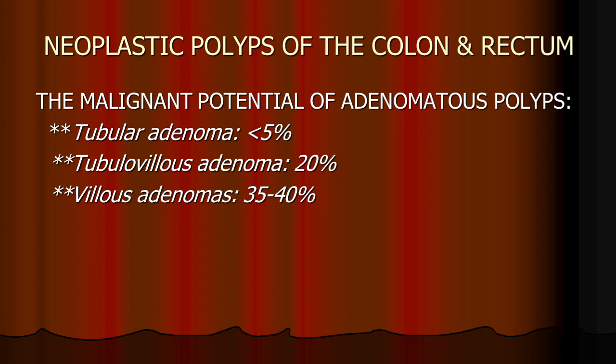The malignant potential of adenomas by type: tubular adenomas, usually smaller than one to one and a half centimeters, carry less than 5 percent risk. When the villous component enters, making it a tubular villous polyp, the risk rises to 20 percent. Villous adenomas carry the highest malignant potential at around 35 to 40 percent.